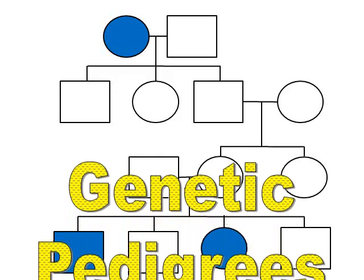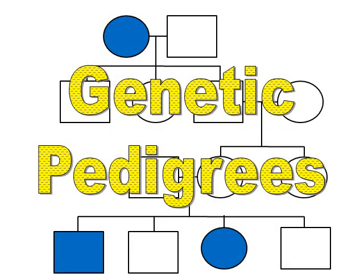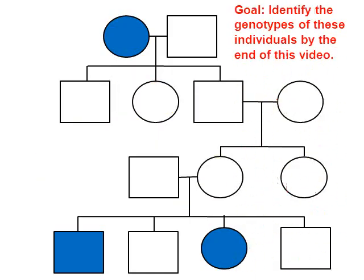In this presentation, we're going to go over genetic pedigrees — how to read them, how to analyze them, how to construct them. My goal is that by the end, if I were to give you a pedigree, you would be able to identify the individual genotypes. Every circle or square represents a person, and we all have genotypes — gene combinations.